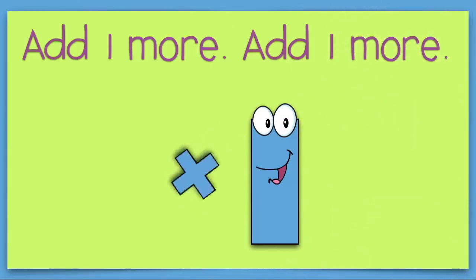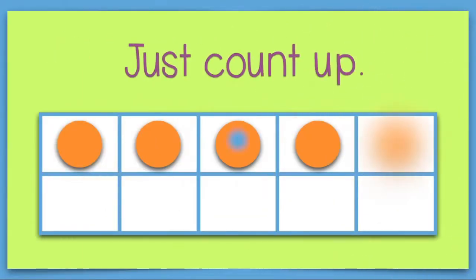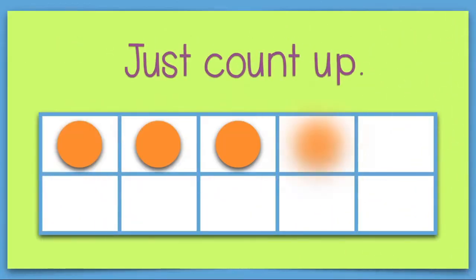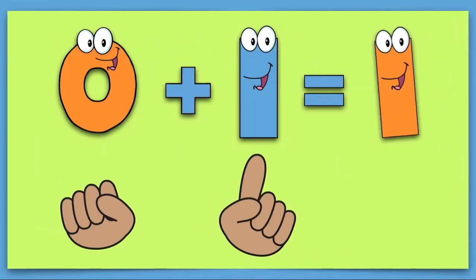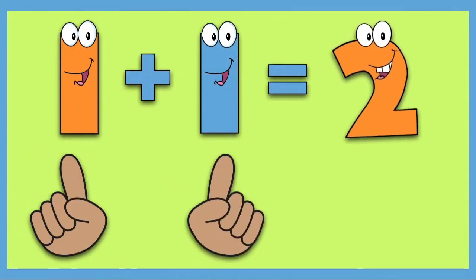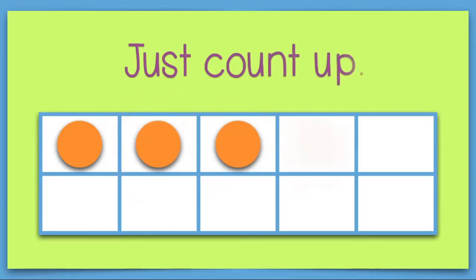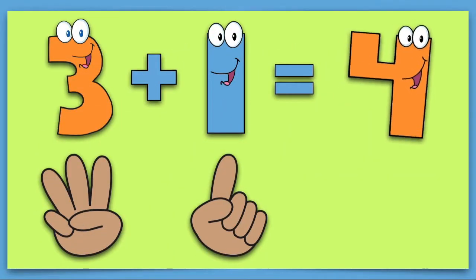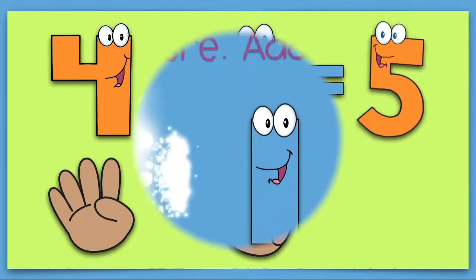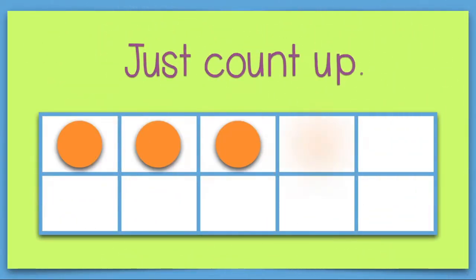Add one more, add one more, just count up. Zero plus one equals one. One plus one equals two. Two plus one equals three. Three plus one equals four. Four plus one equals five. Add one more, add one more, just count up.